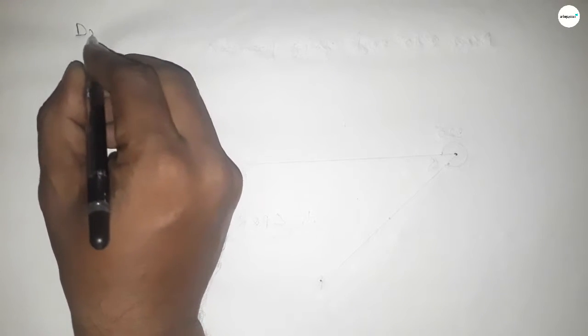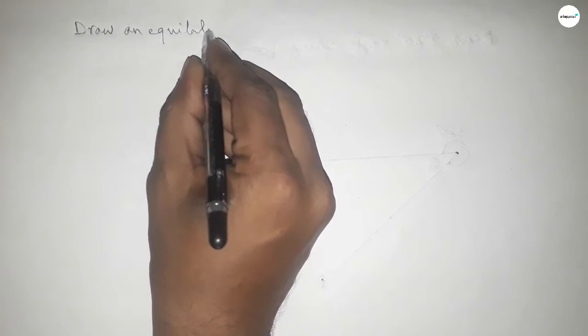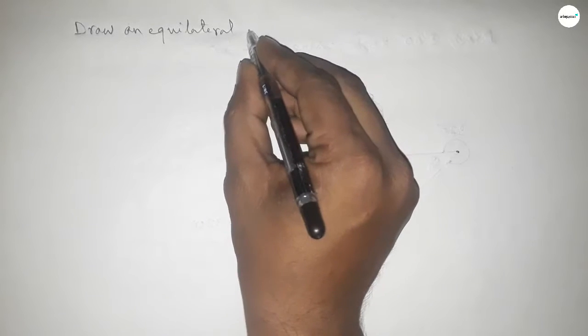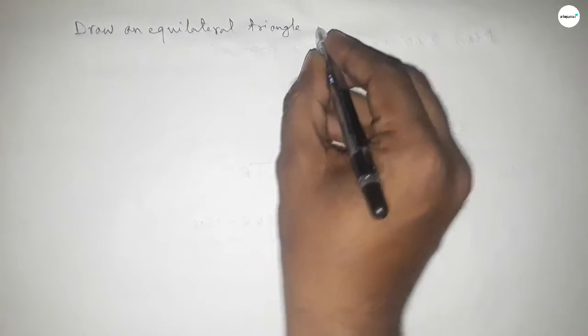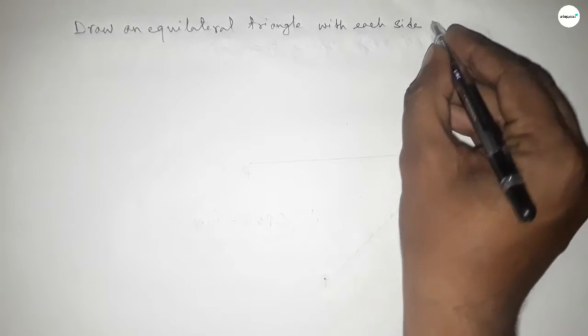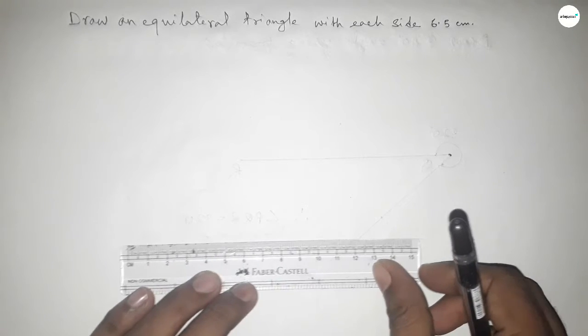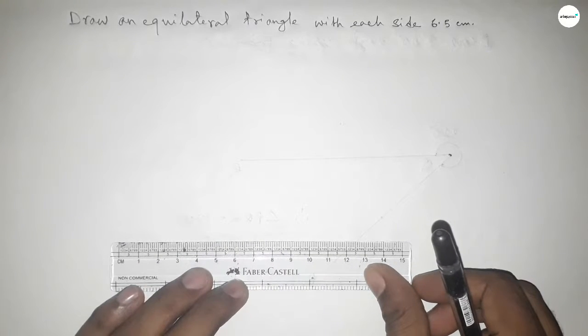Hi everyone, welcome to Siser Classes. Today in this video we have to draw an equilateral triangle with each side 6.5 centimeter. So let's start the video. First of all, we have to draw a line of length 6.5 centimeter.